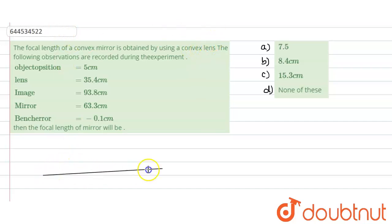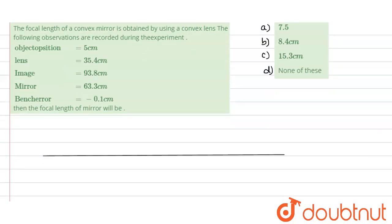For example, let us say this is our principal axis. We take an object. Let us say this is the location of the object. Now we introduce this convex lens. If there are light rays which are coming from the convex lens, they would be converging and it would be forming an image.